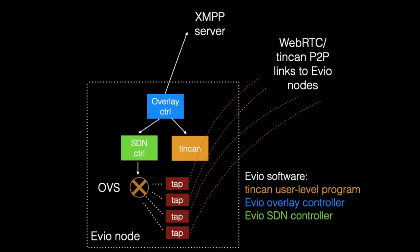Zooming in on an EVO node: we have the TinCan module responsible for peer communication, the tap devices that terminate each P2P link, and the overlay controller that communicates with the bootstrapping service to create and manage links.